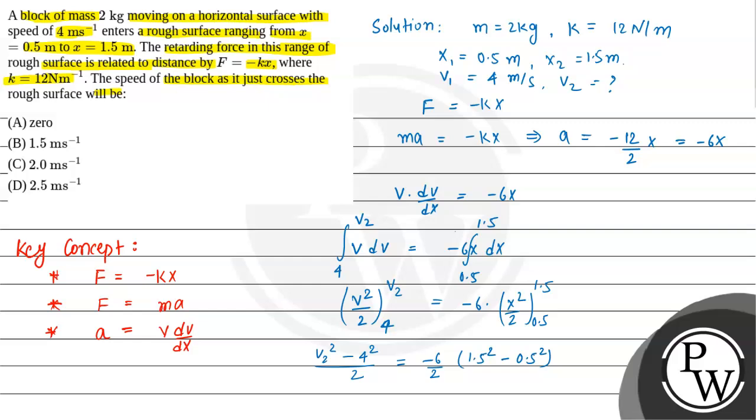v2 square minus 4 square divided by 2 equal to minus 6. The 2 in denominator which is constant, take this out. And then this is 1.5 square minus 0.5 square. Now solving, 2 and 6 cancel to 3.